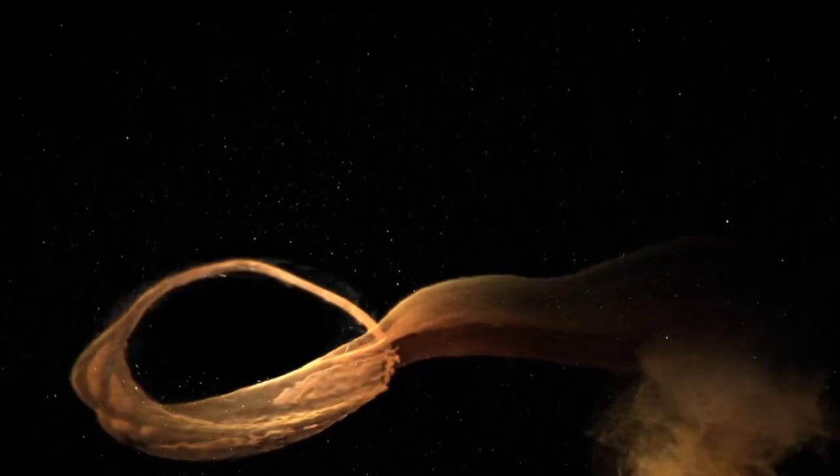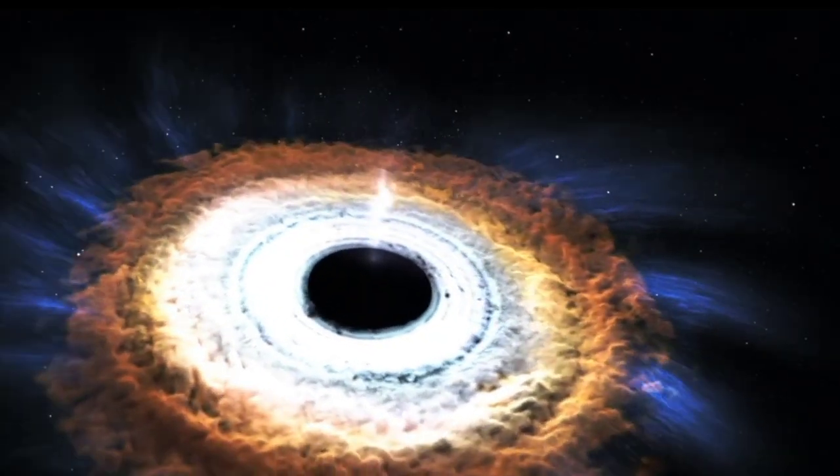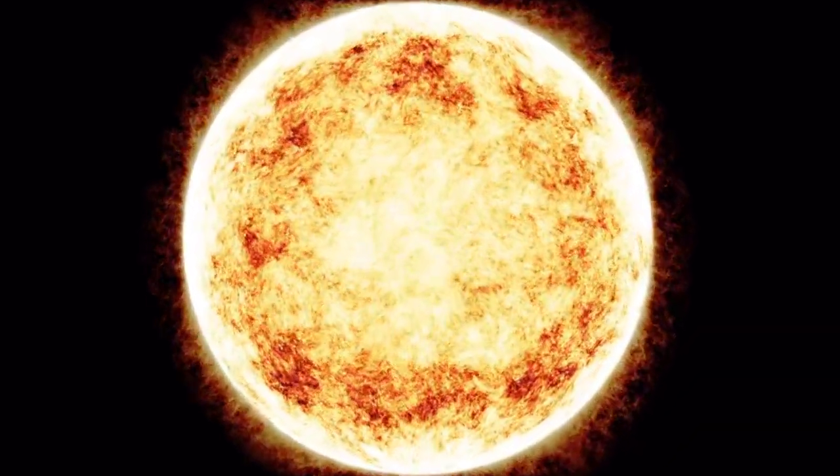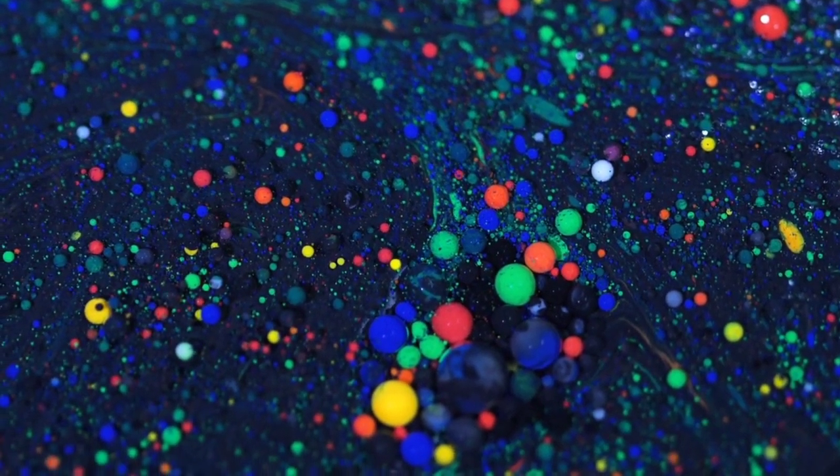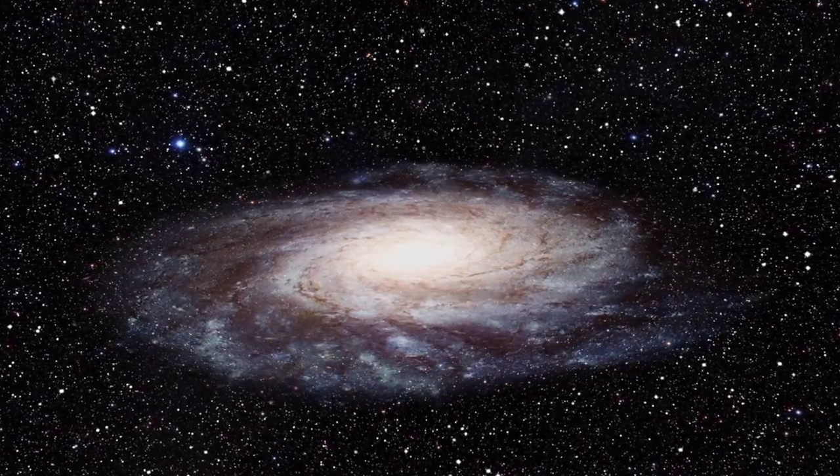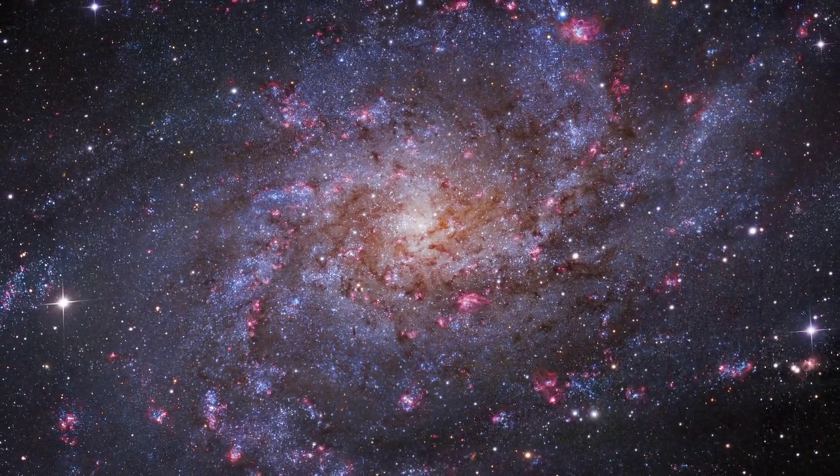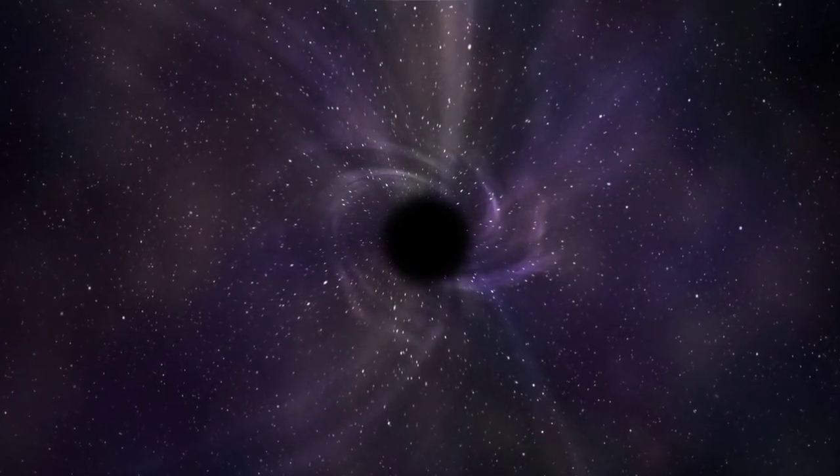Supermassive black holes have masses ranging from millions to billions of times that of our Sun. As far as we can tell, practically every galaxy in the cosmos has one of these supermassive black holes as a seed in its center, including our own Milky Way. And they are connected. A larger galaxy has a larger black hole, whereas a smaller galaxy has a smaller black hole.